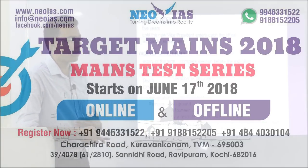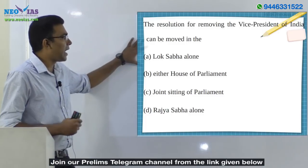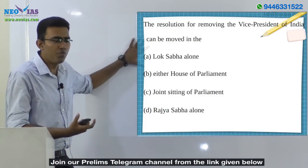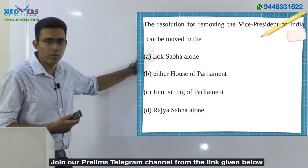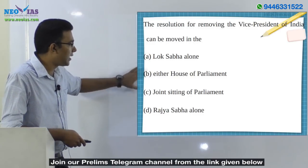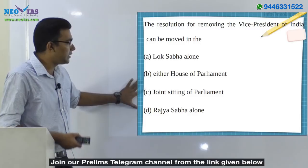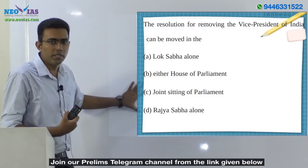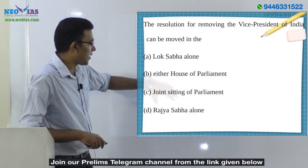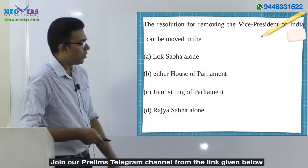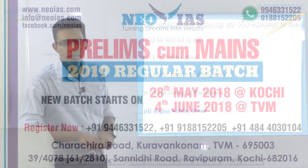Coming back to the question: the resolution for removing the Vice President of India can be moved in — Lok Sabha alone is wrong, either House of Parliament is wrong, Joint Sitting of Parliament is not applicable, and therefore Rajya Sabha alone is the correct answer. The answer is D — Rajya Sabha alone. Thank you.